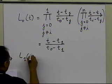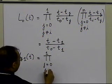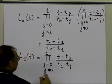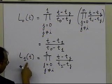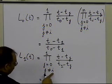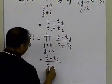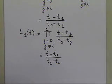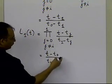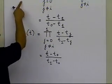For l1(t), using the same product formula with i=1, we start from j=0 which is not equal to i=1, giving the term (t − t0)/(t1 − t0). The next term j=1 equals i, so it is skipped. Thus l1(t) = (t − t0)/(t1 − t0).